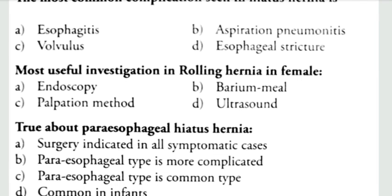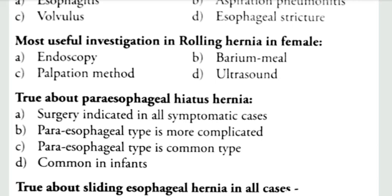Second question: the most useful investigation in rolling hernia in females. The answer is barium meal.